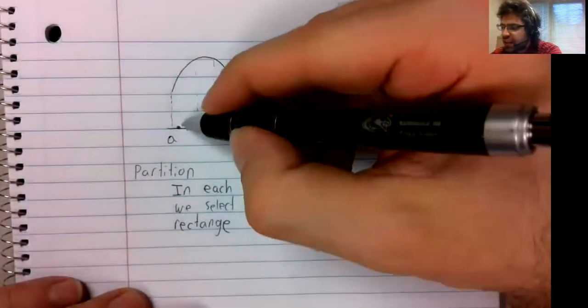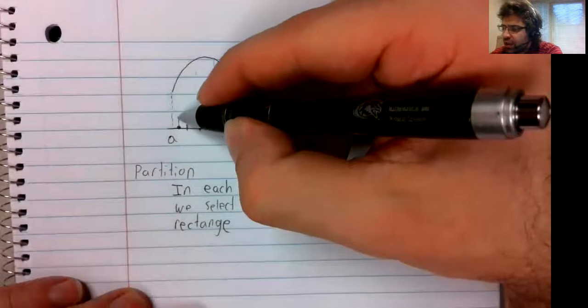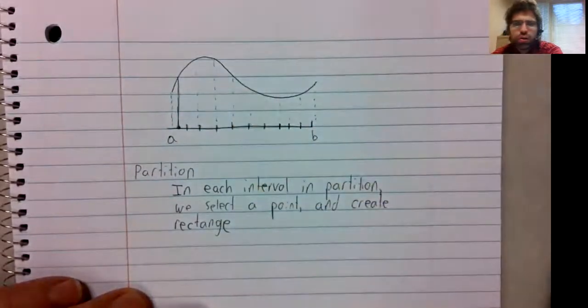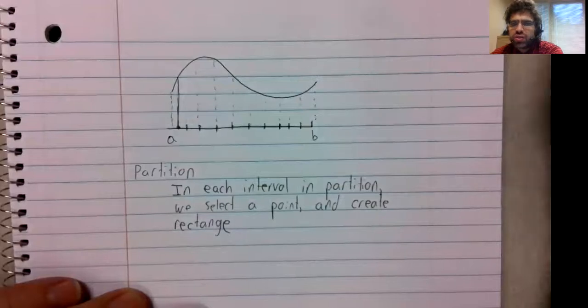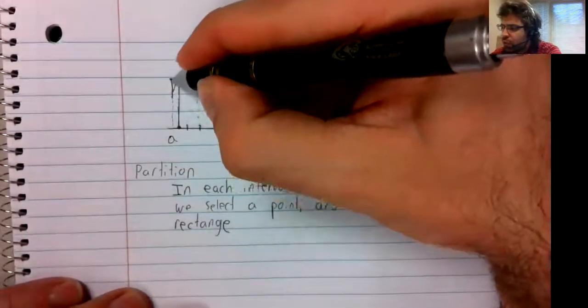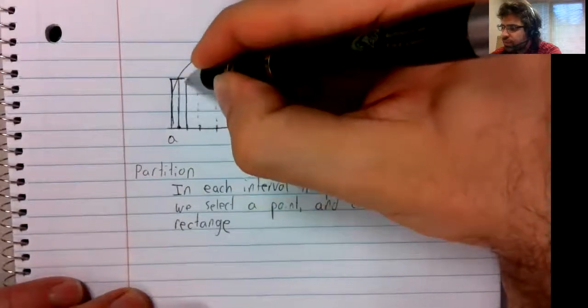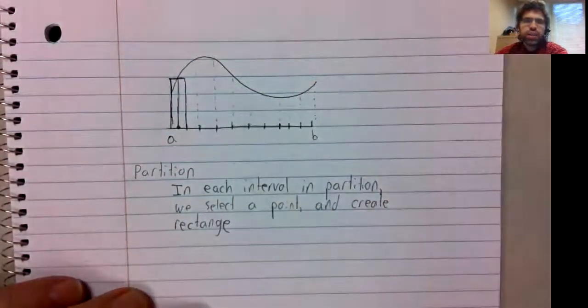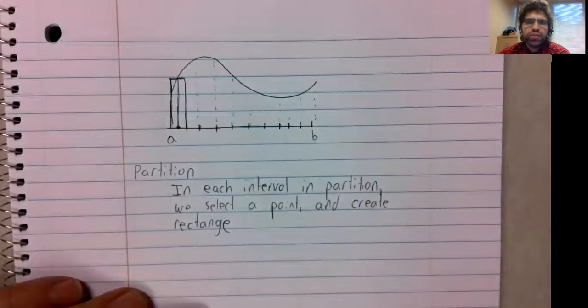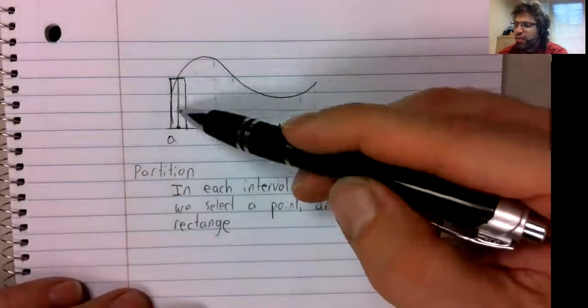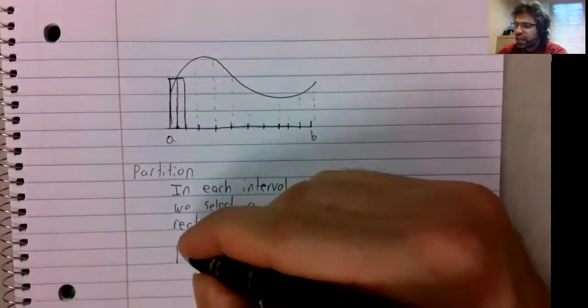Well, we take the point we selected and we go up until we hit the curve. And that gives us the height of the rectangle. And the edges of the partition give its base. And we find the area of this rectangle.